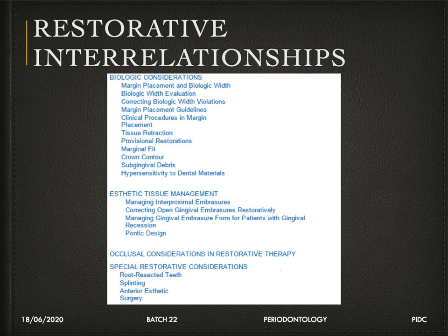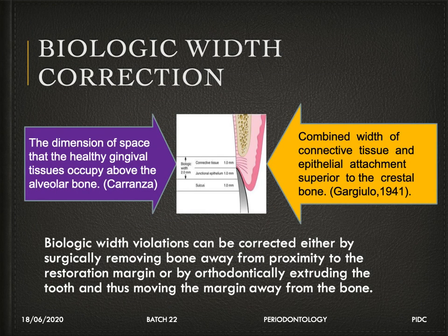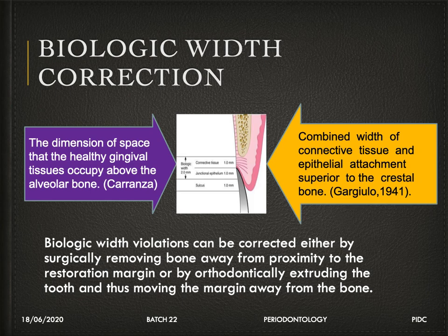Biological width — the margin placement — is critical when placing a crown or filling. If the placement violates the biological width, disease will occur. Biological width is the combined width of connective tissue and epithelial attachment superior to the bone, occupying the space coronal to the alveolar bone. It is usually 3 mm: 1 mm of sulcus depth plus 2 mm of biological width, comprising junctional epithelium and connective tissue attachment.